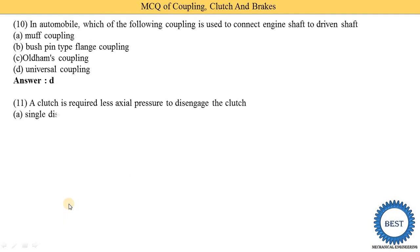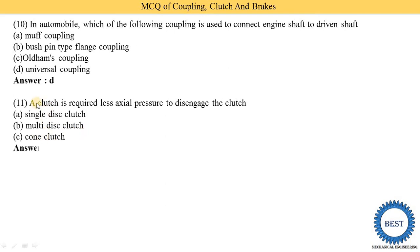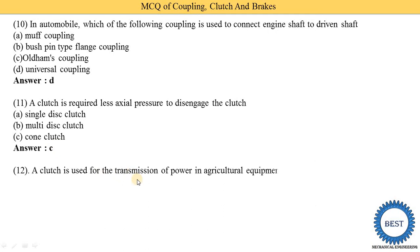A clutch that requires less axial pressure to disengage — which type of clutch is this? Option A: single disc clutch, option B: multi-disc clutch, option C: cone clutch. The correct answer is option C — the cone clutch requires less axial pressure to disengage.